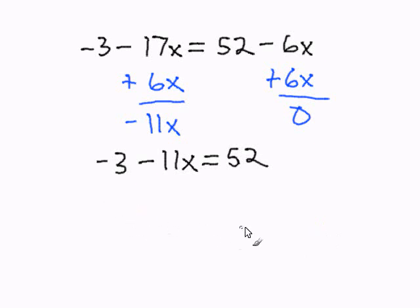Now I'm going to bring all the numbers to the other side of the equation. So negative 3, I have to get rid of that. I'm going to add 3 on both sides of the equation.